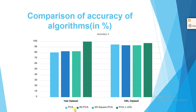I am comparing these four algorithms on two datasets: the Yale dataset and the ORL dataset. As you can see, PCA plus RDA is showing much better accuracy than the others. 2D PCA and 2D Square PCA are exactly the same in accuracy. PCA alone is showing the least accuracy, and the ORL dataset is showing more accuracy than the Yale dataset.